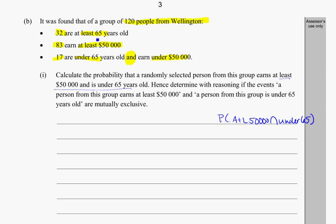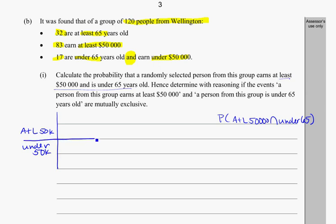I've got two categories here that I'm dealing with: people in terms of their age, and in terms of their income. Since there are two categories, a two-way table might be a good way to break this one up. I could have people who are earning at least $50,000, and the alternative would be under $50,000.